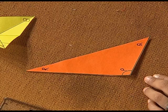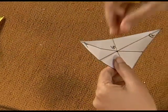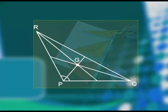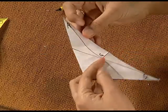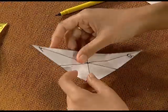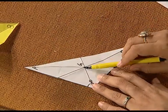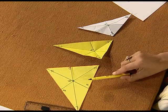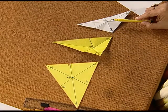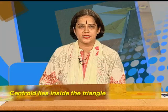Now we will take the third case — an obtuse triangle. We have obtuse triangle R P Q. By following the same process of paper folding, we can find the medians in this triangle. Observe carefully that all three medians meet at a common point called the centroid. The position of centroid in all three types of triangles — whether acute, right, or obtuse — the centroid always lies inside the triangle.